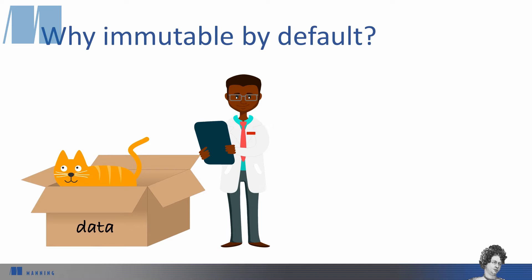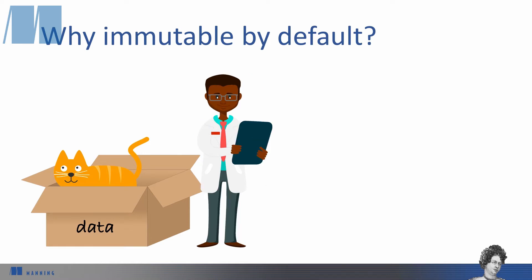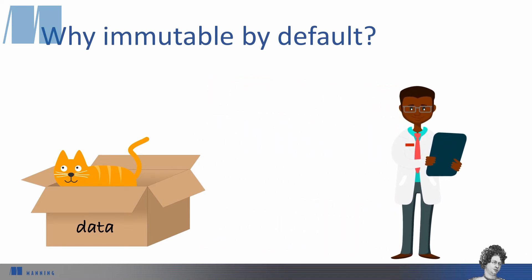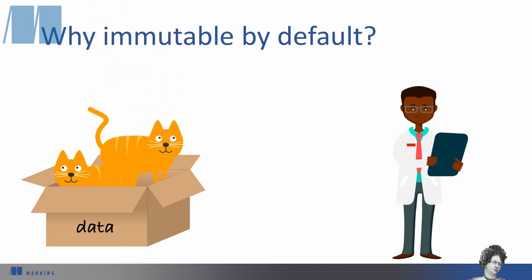The reason Rust variables aren't allowed to change by default is to help prevent some bugs. Bugs can happen if you look at a value and assume that value never changes, but another part of the program might change that value and violate your assumptions. Instead, Rust encodes the assumption that a value will never change by making that the default for variables.